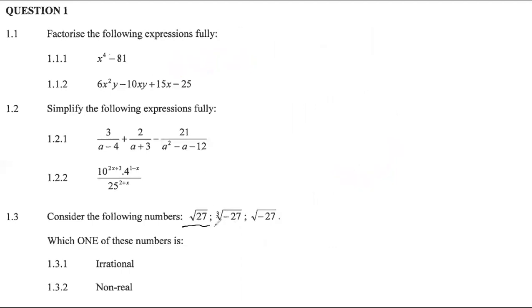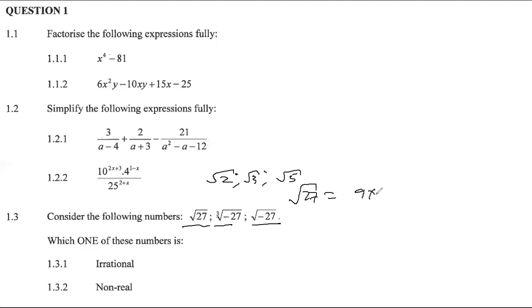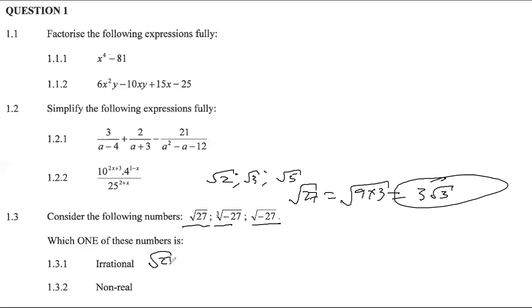Finally, consider these three numbers: square root of 27, cube root of minus 27, and square root of minus 27. Which is irrational? Remember, irrational numbers cannot be represented as a fraction — things like √2, √3, √5. Looking at √27: 27 equals 9 times 3, so √27 simplifies to 3√3. Since √3 is irrational, this number is irrational.